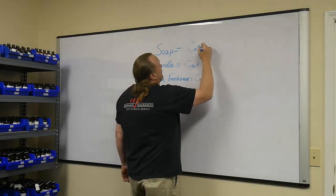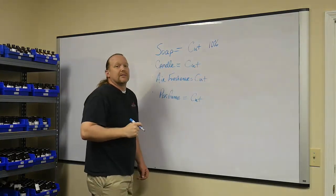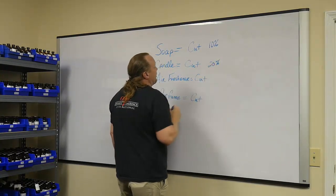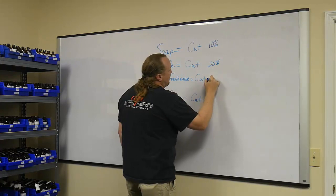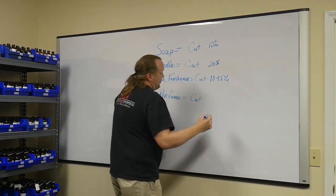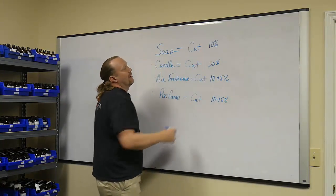So let's say a soap fragrance, as strong as we can possibly make it. Well, maybe we'll have 10% of a carrier oil in there. A candle, maybe 20% of a carrier oil in there. Air freshener, maybe 10 to 15%. Perfume, maybe 10 to 15% carrier oil. They have to have carrier oils in it.